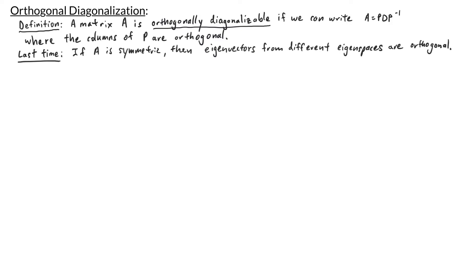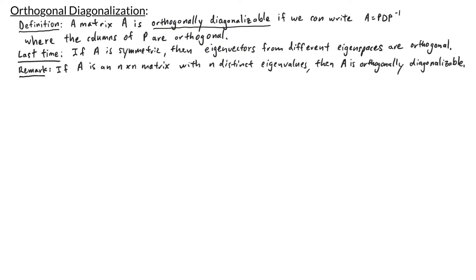In our last video, we proved that if A is symmetric, then any eigenvectors from different eigenspaces will be orthogonal to each other. One thing we can conclude from that result is: if A is an n by n matrix with n distinct eigenvalues, then A is orthogonally diagonalizable, because A is going to have n orthogonal eigenvectors. But it turns out we can say more.